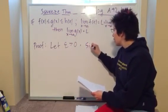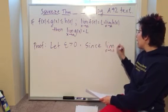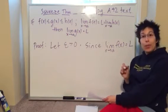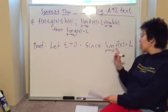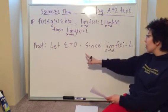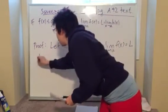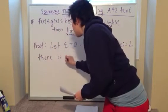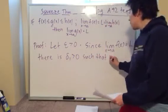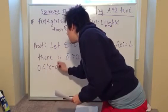Since we are given that the limit as x approaches A of the lower bounding function f(x) is equal to L, we are going to be able to translate this into the precise definition of a limit for this case. So since this is the case, and epsilon is greater than zero given, then there is a delta one greater than zero,